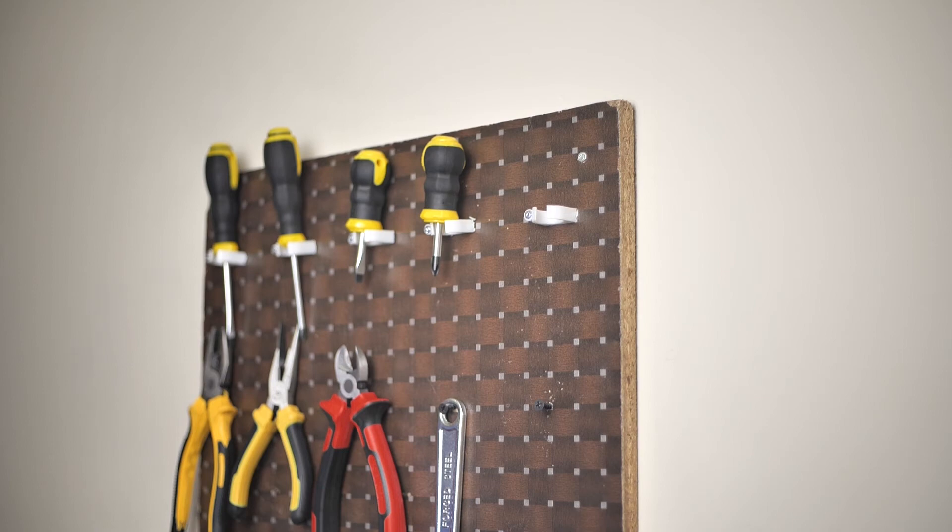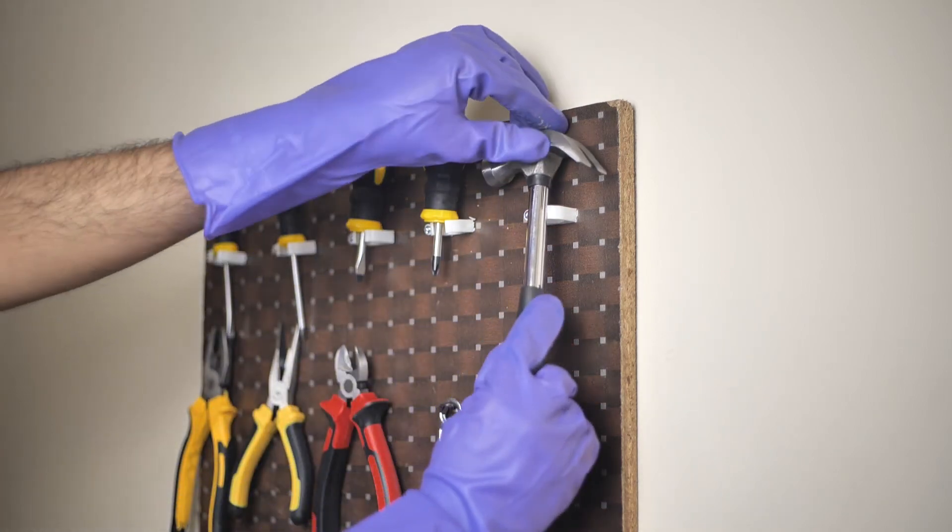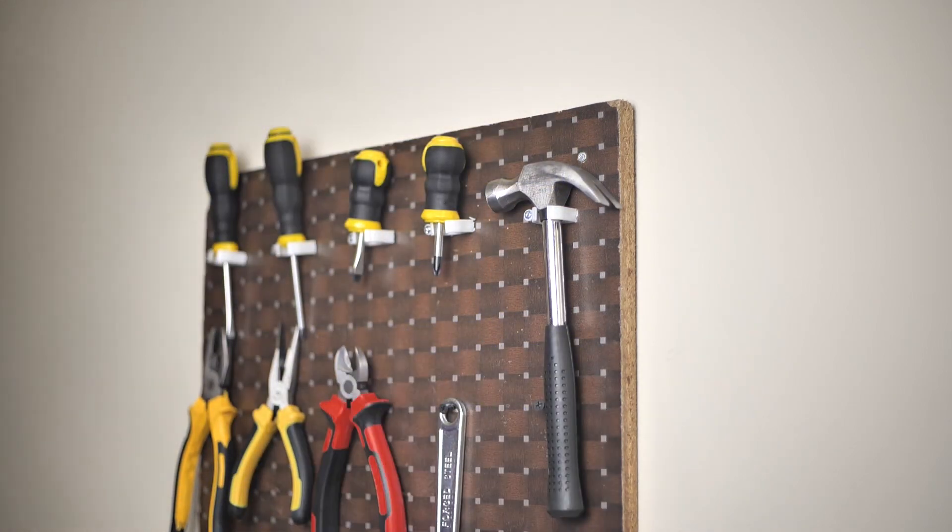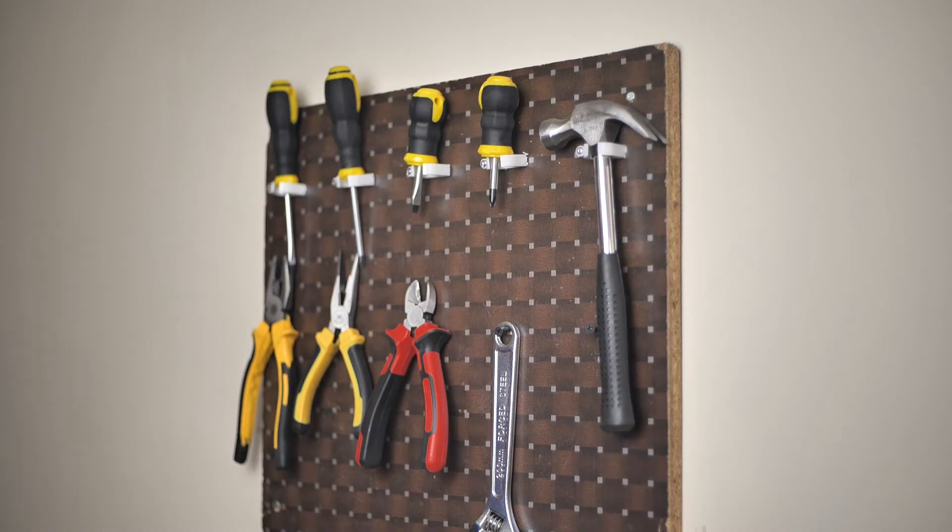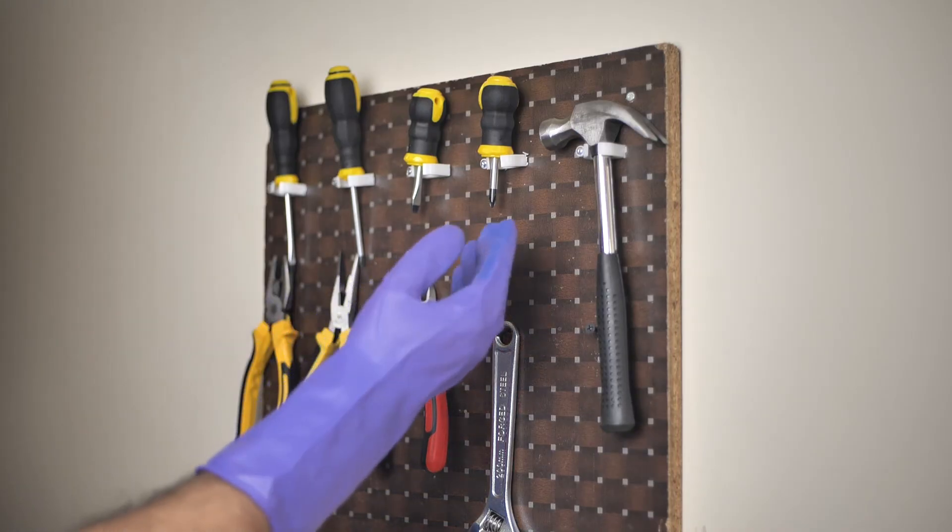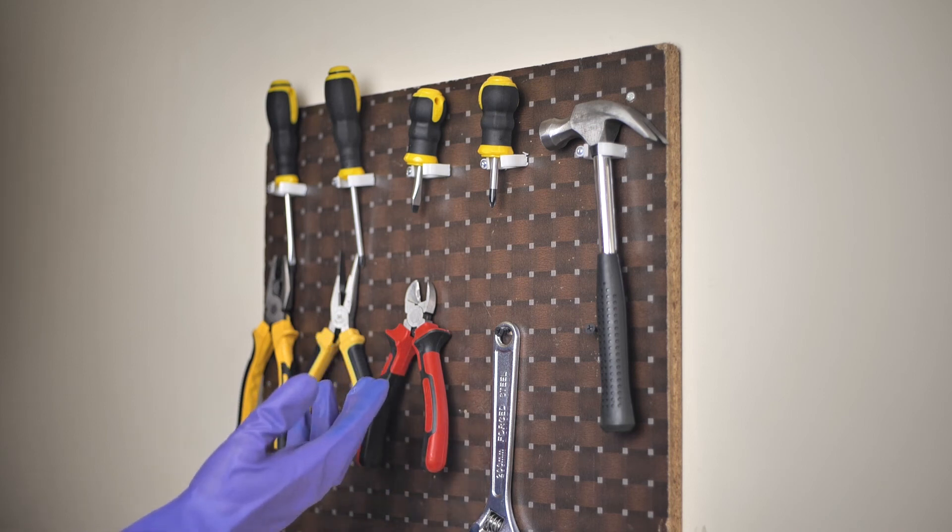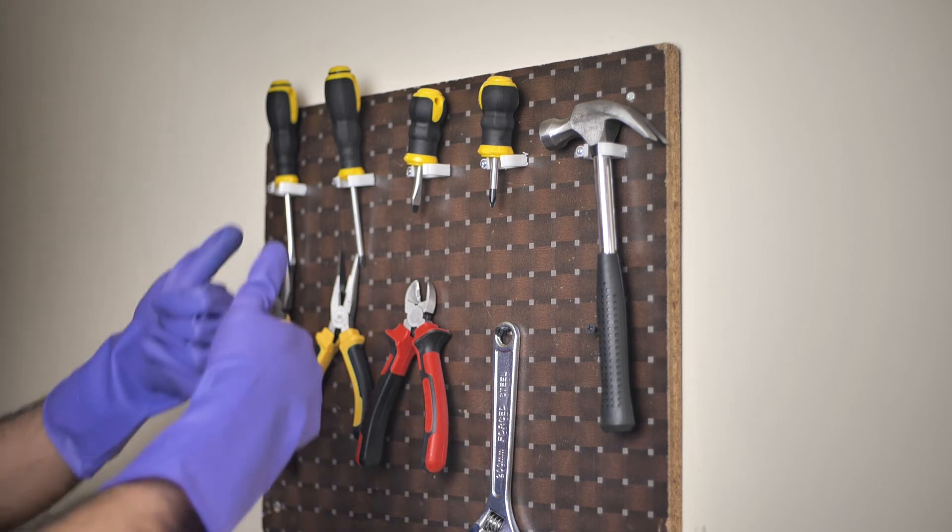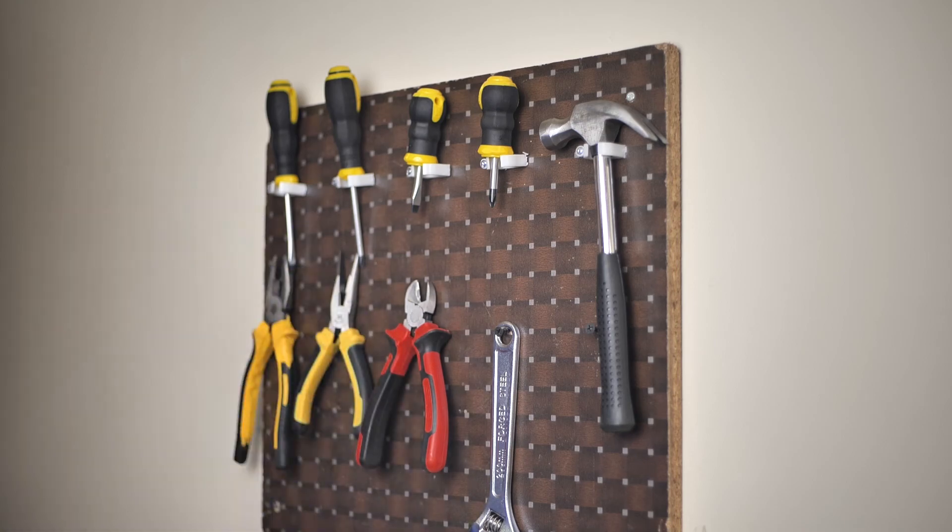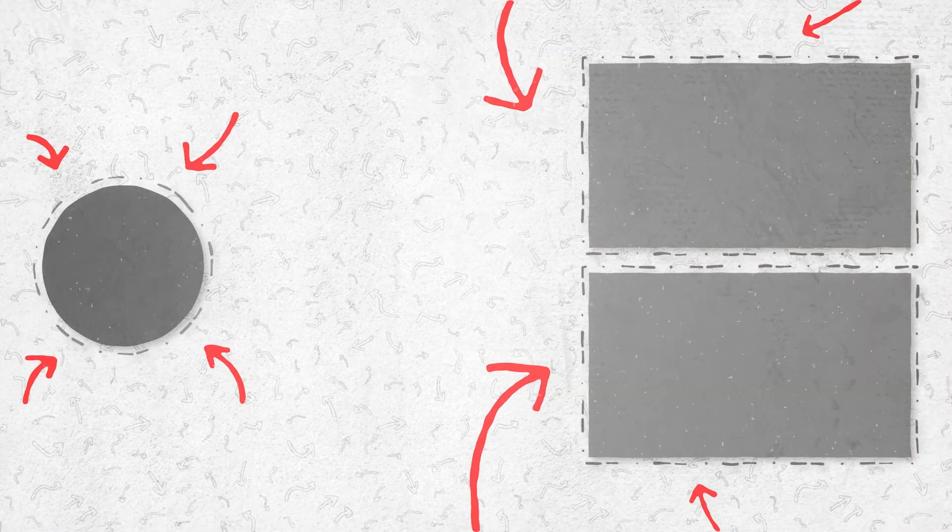You can also easily place hammers and wrenches on this hanger using the same method that we have. That is how easy it is to make a hanger for your tools at home. Using tools, screws, wire clips, and some wood, you can make something that will help you organize your tools and keep them in check. We hope that this video helped you and that you follow Hooked on Tool for more content like this.